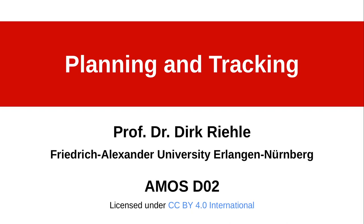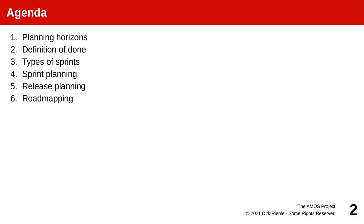Hello everyone and welcome back to AMOS, our course on agile methods and open source software. This is the second section of the fourth part of the course on planning and tracking. We're discussing product management, specifically the Scrum role of a product owner. In the previous section we covered the basics, and now we will look at planning, different types of planning horizons, the tools, the processes and activities associated with it, and also tracking how you're doing with respect to the plan, and adjusting the plans in accordance with how things are playing out.